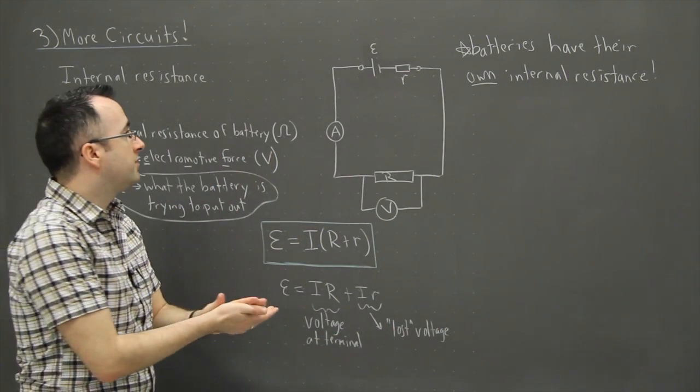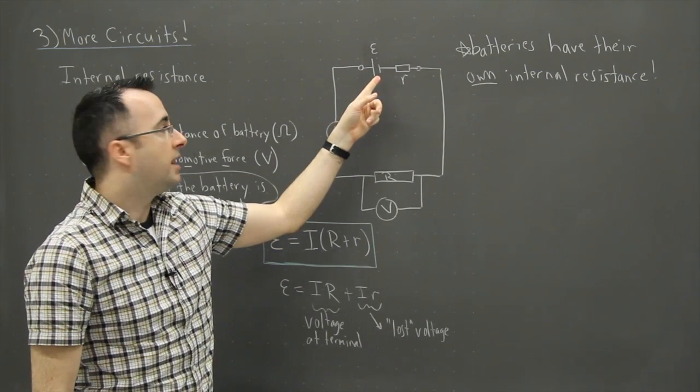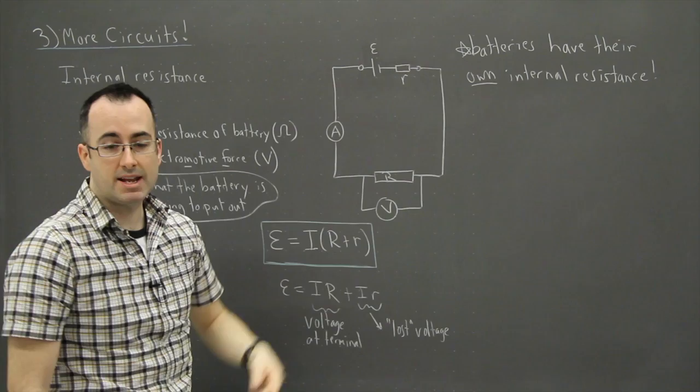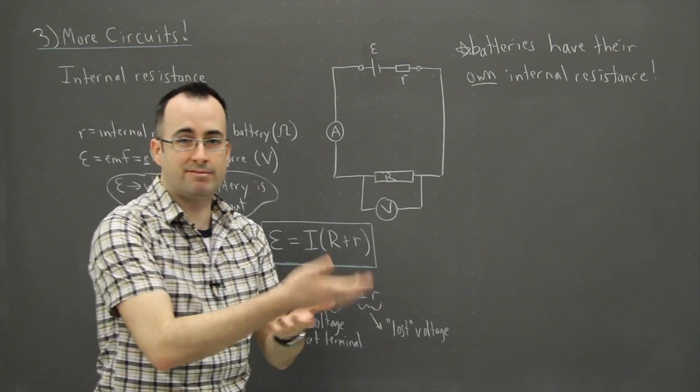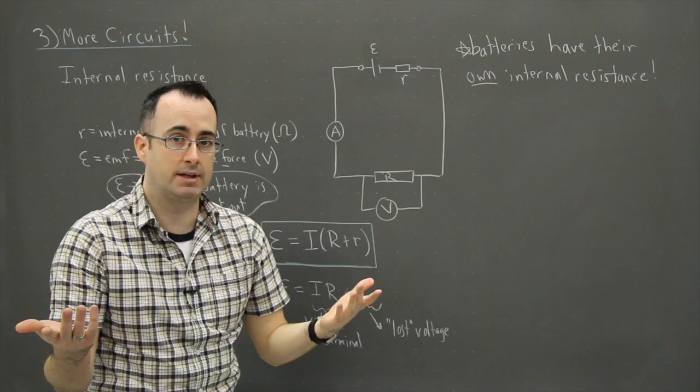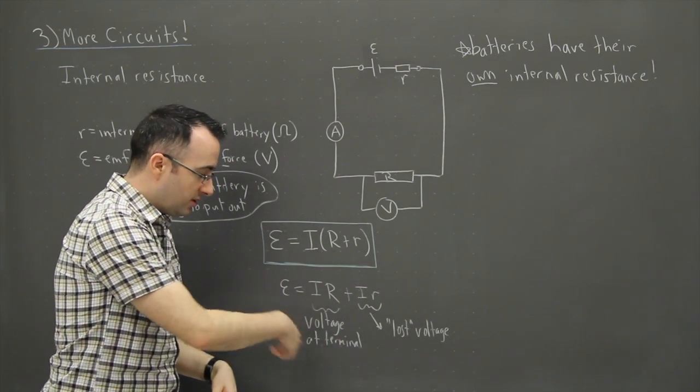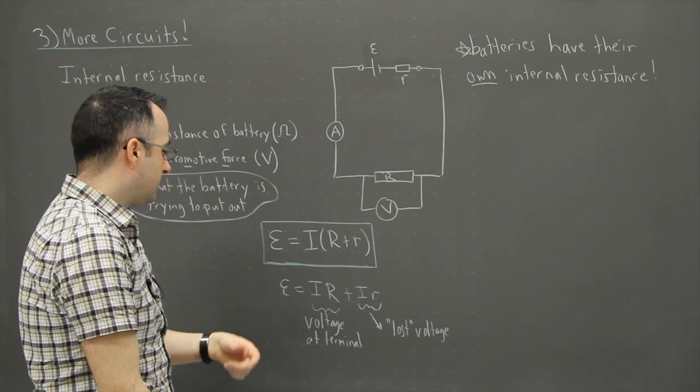In practice what ends up happening is this: you have your battery, let's say it's a 5-volt battery, and then you have a resistance in there, a little resistor. What happens then is, in reality, maybe the 5-volt battery doesn't really kick out 5 volts, maybe it's only 4.